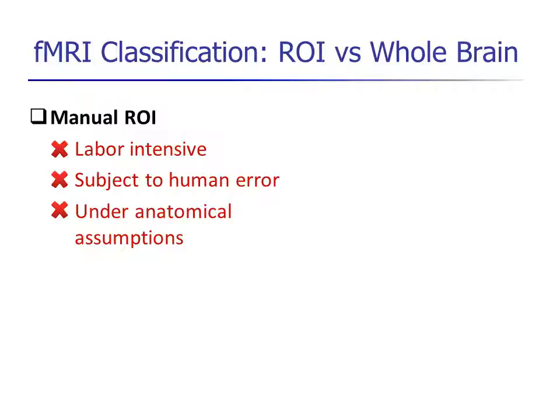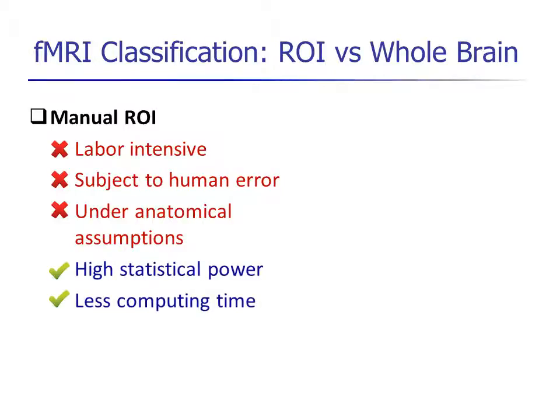Manual ROI has several problems. It is labor-intensive, subject to human error, and based on anatomical assumptions. On the other hand, it has high statistical power and computing efficiency.